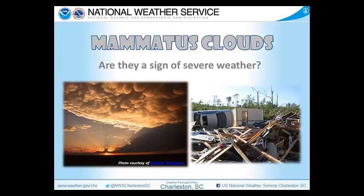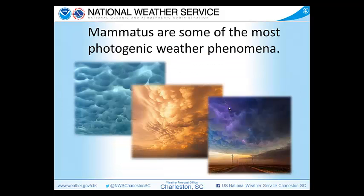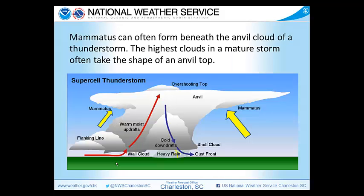So let's get to the question at hand: are mammatus clouds a sign of severe weather? Mammatus clouds are some of the most photogenic phenomena in weather. You can see here these pictures with all the different colors because of the sunlight angle shooting off the bottoms of those clouds. Why do we get mammatus clouds? Well, mammatus are often formed beneath the anvil of a thunderstorm. The highest clouds in the mature thunderstorm will take the shape of an anvil top, and beneath the anvil top is where most often you'll see those mammatus clouds.